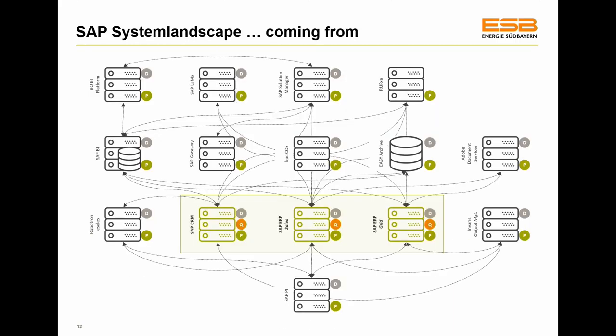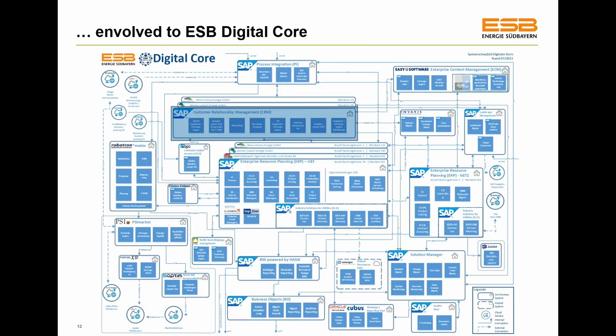The system landscape comes from a clear, structured, old-school way, with many on-premise systems like ECC, BI, BO, and Adobe services. Now the strategy moves to a more hybrid scenario — the ESB digital core. Today the landscape runs a clear core strategy with ECC, currently in transformation to S4HANA, with public cloud software components as well as non-SAP software all connected to each other.